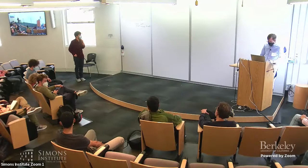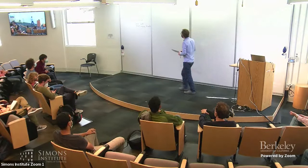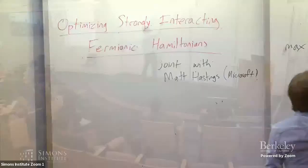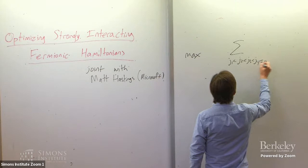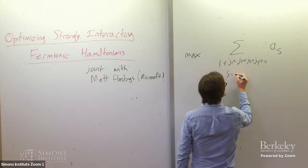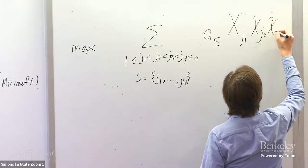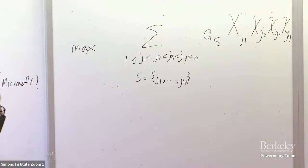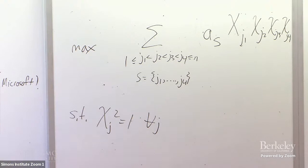Let's talk about this problem: maximize a sum over ordered sets J1 < J2 < J3 < J4, where indices are between 1 and n, of real coefficients a_s — where s stands for (J1, J2, J3, J4) — times indeterminates χ_{J1} χ_{J2} χ_{J3} χ_{J4}. Subject to χ_J squared equals one for all J. You would think of this as optimizing a homogeneous degree-four polynomial over the Boolean cube.